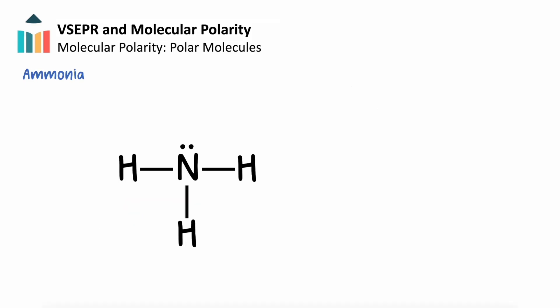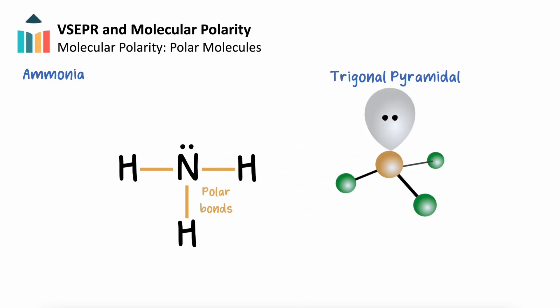Finally, in ammonia, we have polar hydrogen-to-nitrogen bonds. The lone pair of electrons on the central nitrogen atom gives this structure a trigonal pyramidal molecular geometry. The movement of the lone pair away from the bonding electrons is further exaggerated by the stronger pull that nitrogen has on the bonding electron pairs relative to hydrogen. The bond dipoles created by the hydrogen-to-nitrogen bonds point in and up toward nitrogen. The shared upward direction of these dipoles gives ammonia an overall dipole moment, making it a polar molecule.